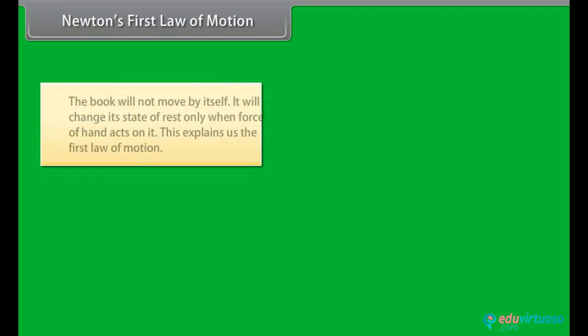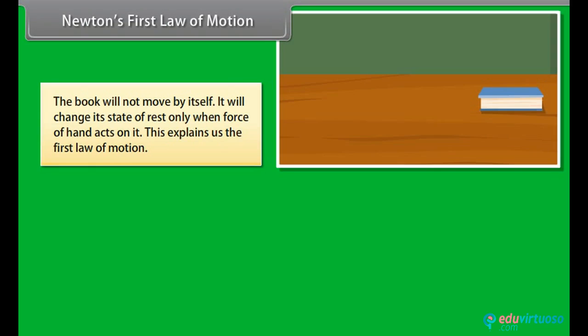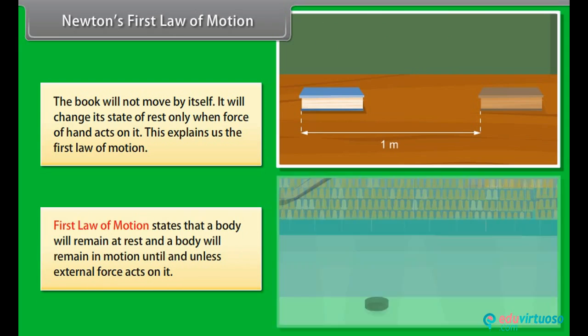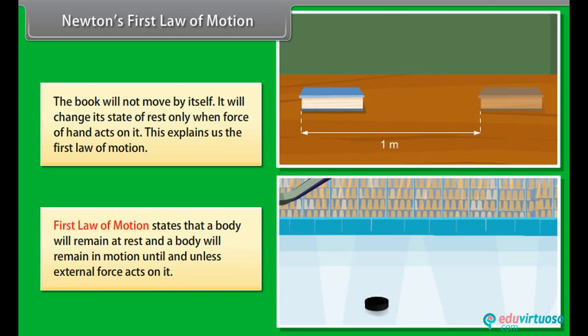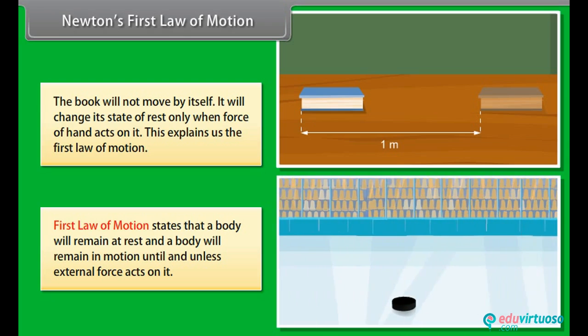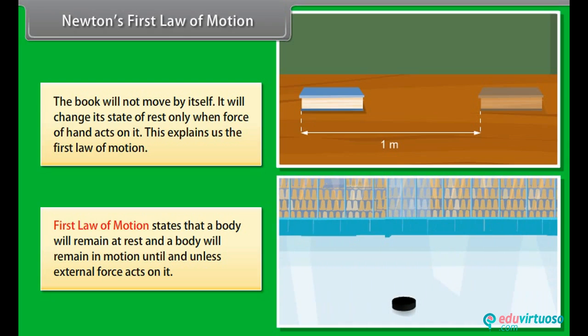Newton's first law of motion. The book will not move by itself. It will change its state of rest only when force of hand acts on it. First law of motion states that a body will remain at rest and a body will remain in motion until and unless external force acts on it.